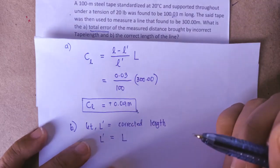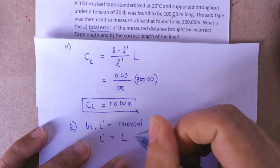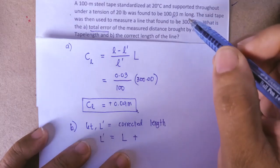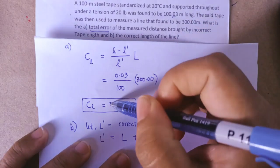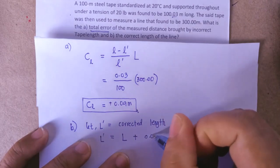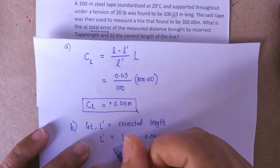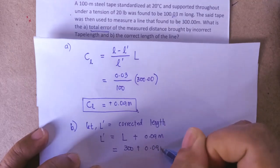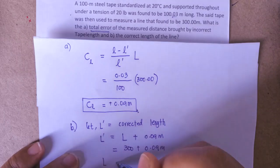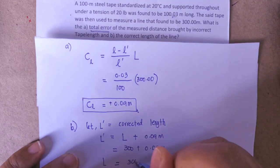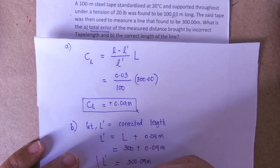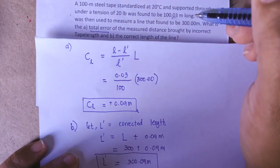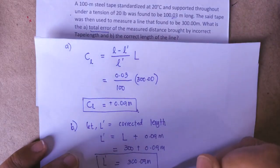And you have a plus. Why is it plus? It's always plus now because the tape is too long, and it's measured, that's why it's positive here. Then you have 0.09 meters. Substitute the values: 300 plus 0.09 meters will give us 0.09 meters. Therefore we can say that the corrected measurement of line is 300.09 meters instead of 300 meters.